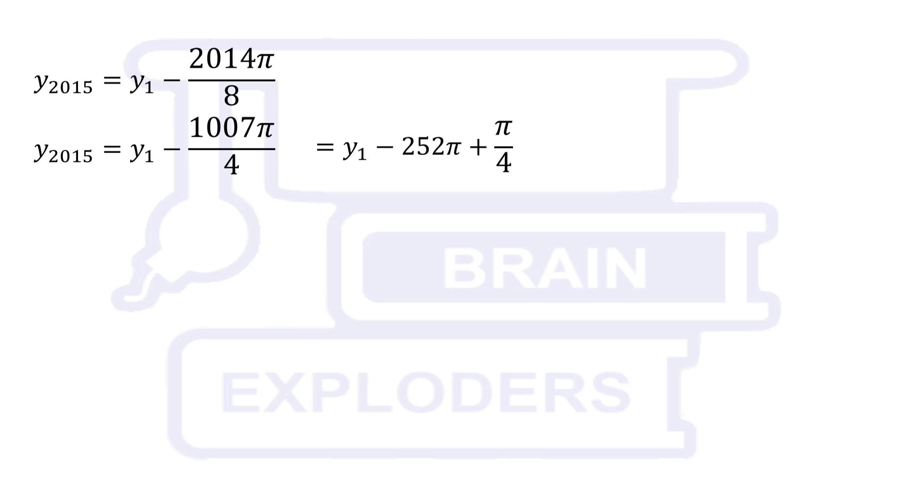Now apply tan on both sides. Removal or addition of 2 pi in the angle of any trigonometric ratio doesn't change its value. Therefore, any even integral multiple also doesn't change its value. So, tan y 2015 is equal to tan of y1 plus pi by 4.